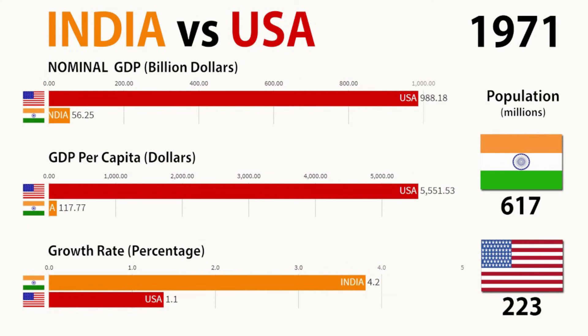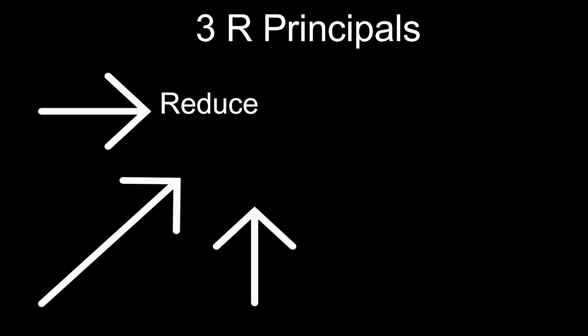Thus, more consumption leads to more waste generation. On an average, a US citizen consumes 50 times as much as an Indian. A US-born baby, due to its high consumption pattern, will damage the Earth's environment 20 to 100 times more in its lifetime than a baby born in a poor family of a less developed country. A Japanese person with a similar lifestyle to that of an American causes half the environmental impact due to improved eco-friendly technology, adoption of energy efficiency and following the 3R principle — reduce, reuse and recycle.